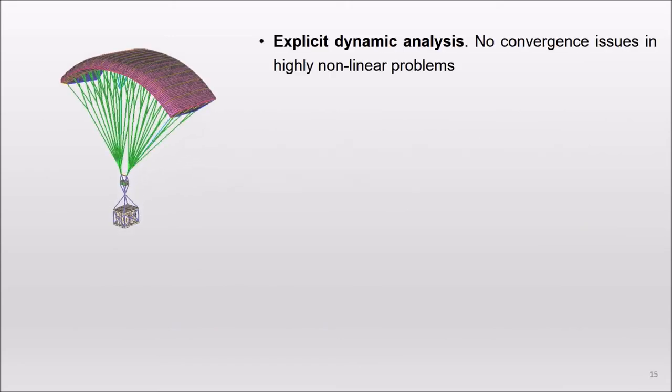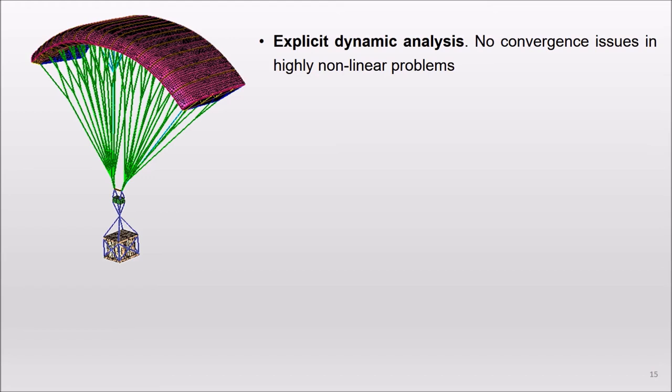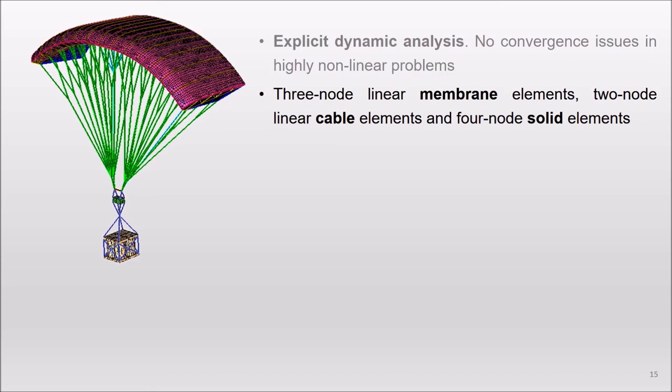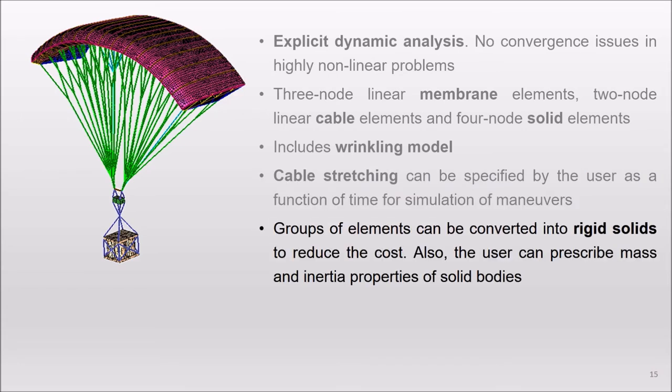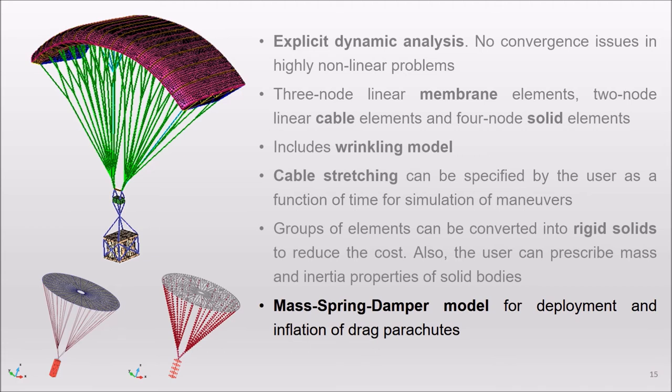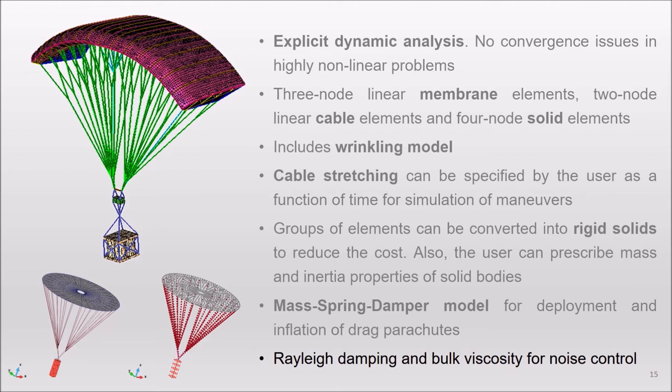Regarding the structural solver, this is a dynamic finite element method based on a large deformation, small strain formulation with second-order explicit time integration. The geometry can be discretized using membrane, cable, and solid linear elements. This includes a wrinkling model. Cable stretching can be specified by the user as a function of time for the simulation of maneuvers. Note that this also simplifies the model setup, because sometimes it is difficult to give the correct length of the lines in the CAD model. In ParaJuice, groups of elements can be converted into rigid solids to reduce the computational cost when the deformation is not relevant, for example in the modeling of payloads. There is also a mass-spring damping model that replaces the finite element formulation when the distortion of the element is high. This can be used, for example, for the initial stages of deployment and inflation of parachutes. The solver also includes artificial damping for the control of numerical spurious oscillations.